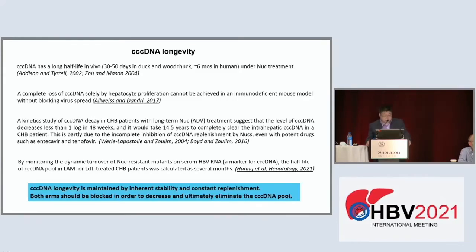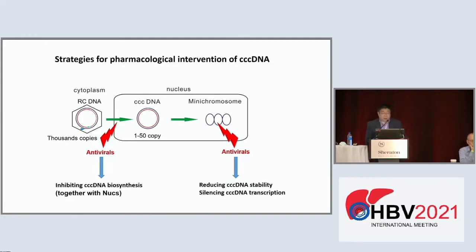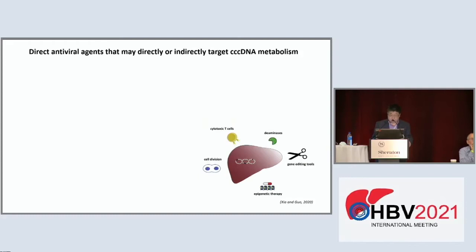The cccDNA longevity is maintained by its inherent stability and constant replenishment, so both arms must be blocked to decrease and ultimately eliminate the cccDNA pool. Strategies for pharmacologic intervention of cccDNA include two major approaches: either blocking cccDNA biosynthesis — probably together with nucleos(t)ide analogs to reduce viral load — or targeting the preexisting cccDNA itself, either by reducing its stability or blocking its transcription activity. Direct antiviral agents targeting cccDNA metabolism span several categories.